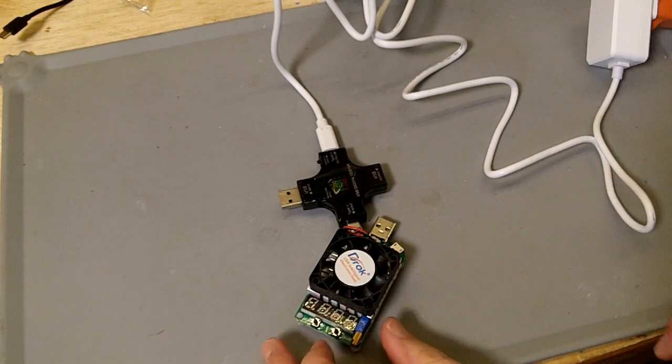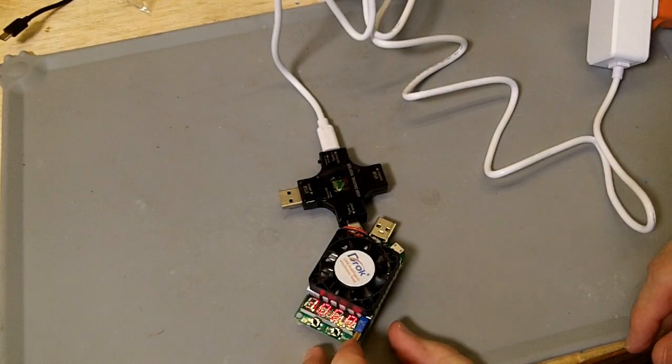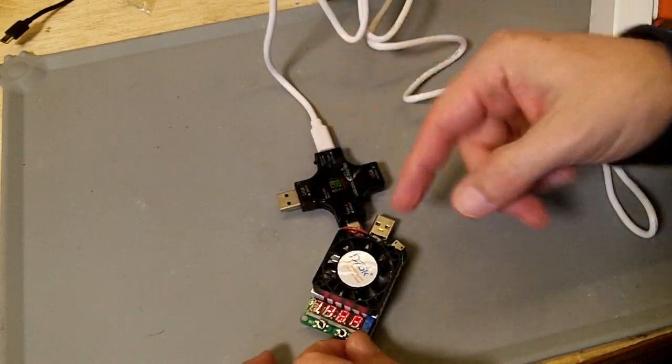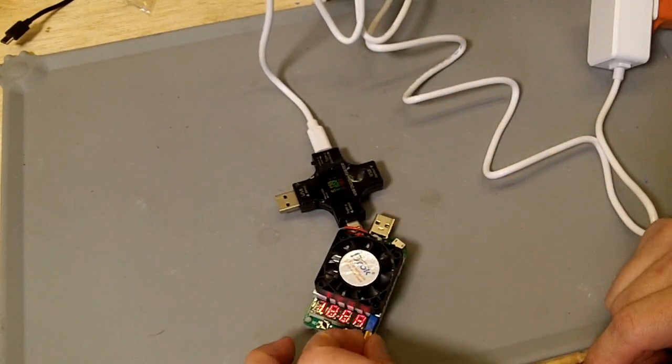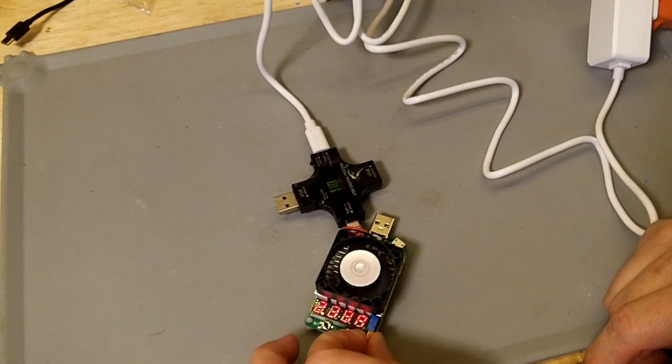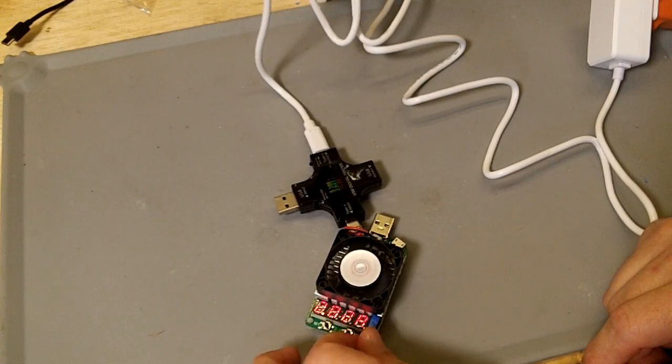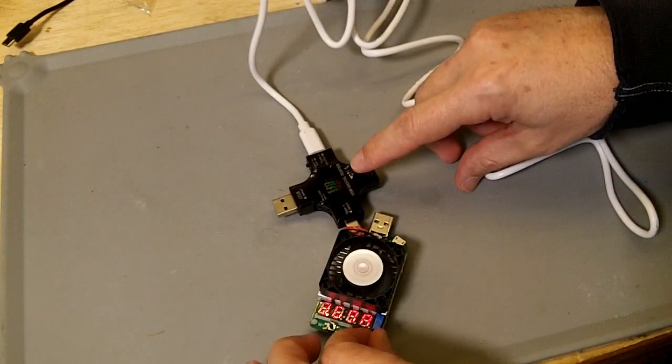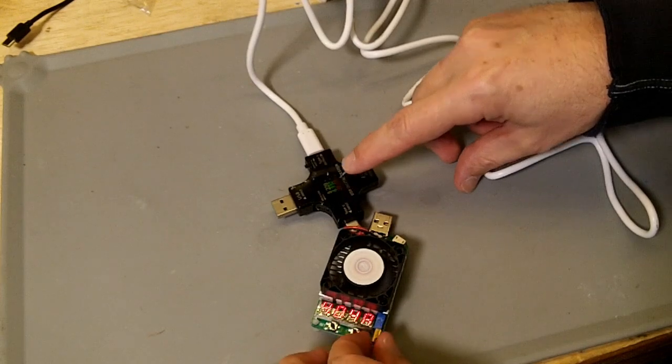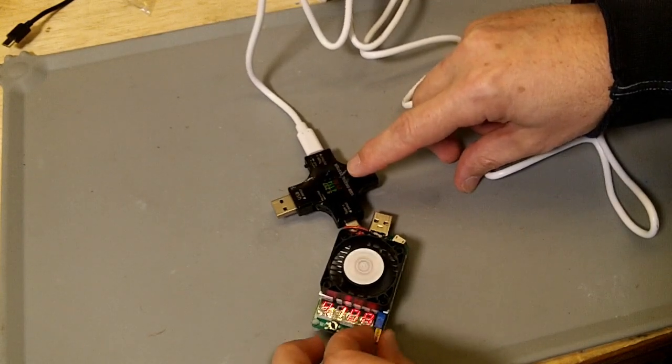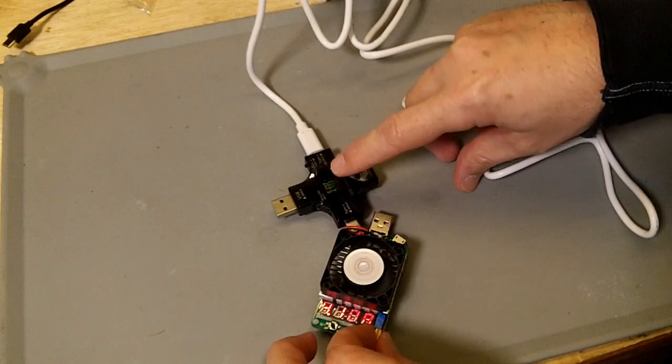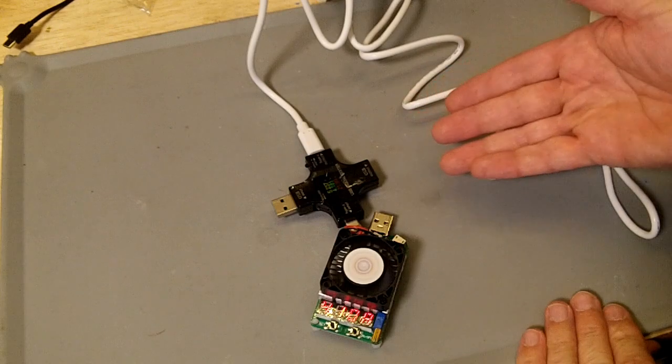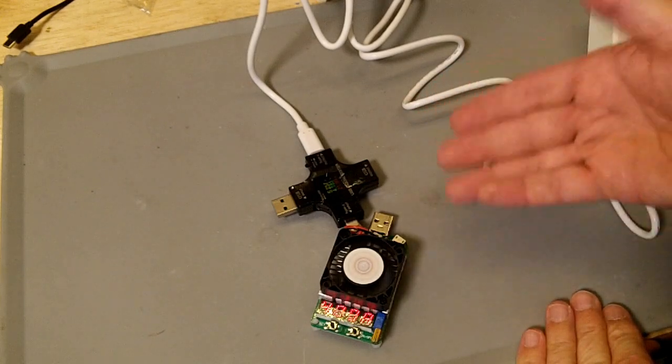I have my 5-volt USB load tester plugged in here. There's 1 amp, which is 5 watts, and let's crank this up. I don't even know if my load will do a full 5 amps at 5 volts. So we're up to 3 amps. There's 4 amps. And the voltage here is above 5, it's 5.2 volts. I'm maxing out at 4 amps.